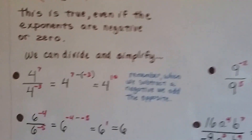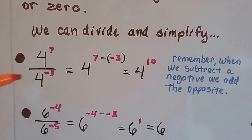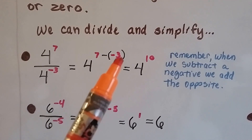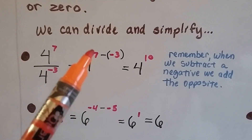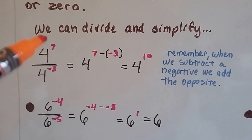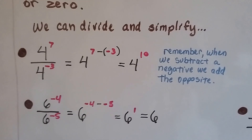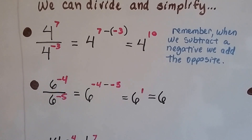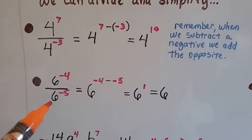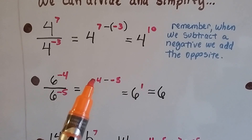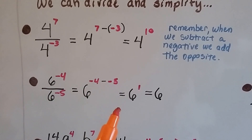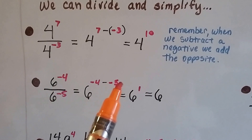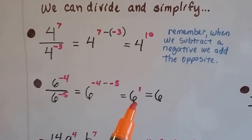If we have four to the seventh power over four to the negative third, we get seven minus negative three. Remember, when we subtract a negative we add the opposite, so it's seven plus three — four to the tenth power. For six to the negative fourth over six to the negative fifth, that's negative four minus negative five, which is negative four plus five — six to the first power, which is just six.